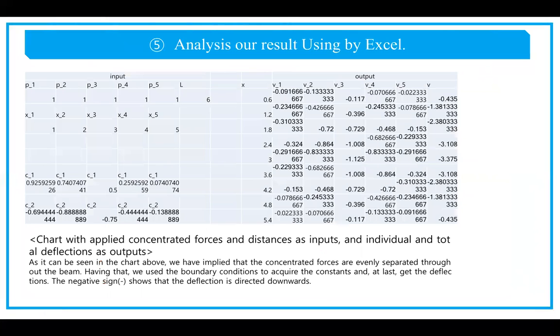Now this is the chart that we made using the equations we found earlier. As can be seen, as input we have five different concentrated forces spread evenly in one beam of total length L, in this case six. By that, we got v1, v2, v3, v4, v5, and we totaled it up, getting the total deflection.